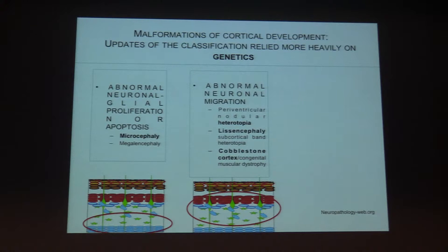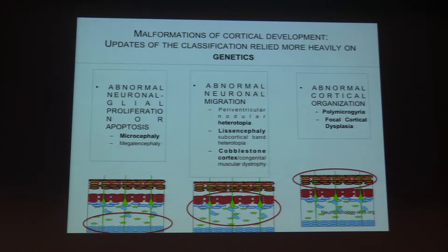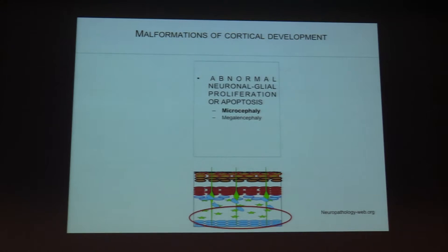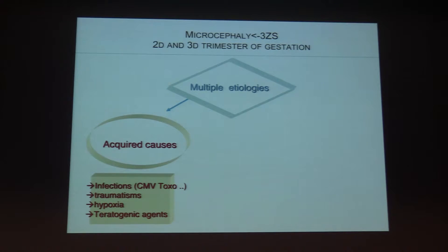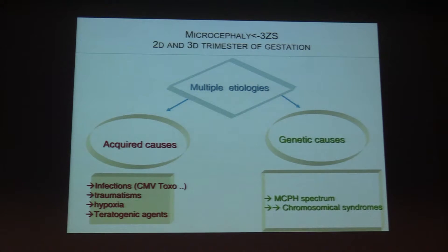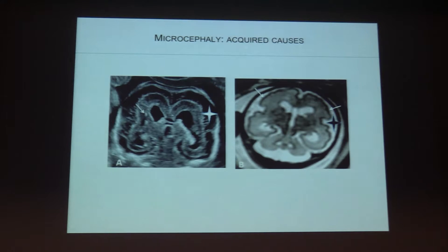Let's see these by imaging. Here you have the three different steps and the different anomalies related to each step. The first is abnormal neuronal proliferation. Microcephaly can be due to acquired causes — infections are the most important — but also hypoxia or trauma, and genetic causes which give microcephaly spectrum and chromosomal syndromes. Here you have a microcephaly with enlargement of the pericerebral fluid, and it is very important to see the presence of calcifications.